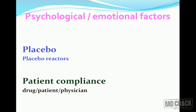The next important factor is psychological and emotional factors, which includes placebo. Placebo is a medication which is pharmacologically inert but gives relief to the patient. Patients who respond to this are called placebo reactors. Placebo is also used during clinical trials as a control, which we will refer to when we come to the discussion of clinical trials.